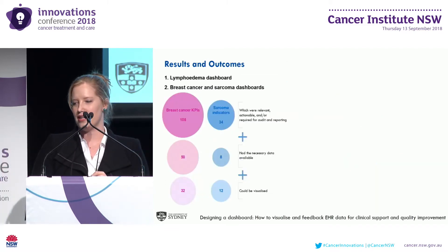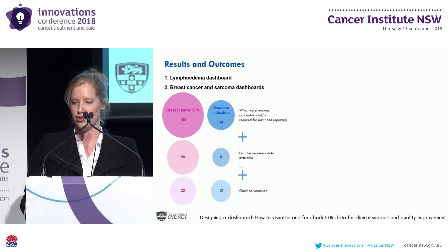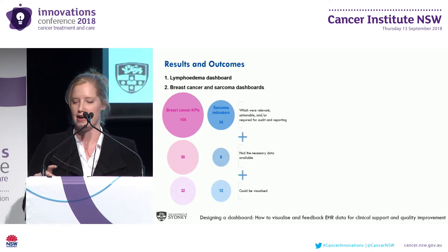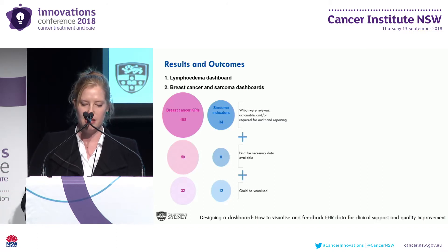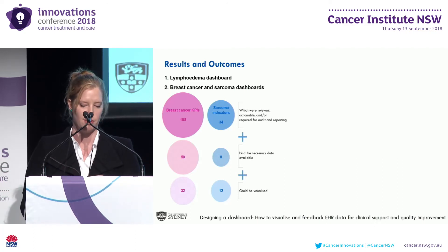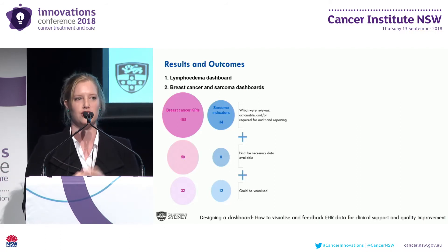What we're currently working on is breast cancer and sarcoma dashboards, looking at both the oncological outcomes and service provision indicators for both. Throughout the review process, out of several hundred indicators, we got them down to about 100, and then finally 32 for breast cancer and 12 for sarcoma. The final requirements were developed and documented with huge input from subject matter experts — including surgeons, medical oncologists, radio oncologists, care coordinators, pathologists, and centre directors and administrators.